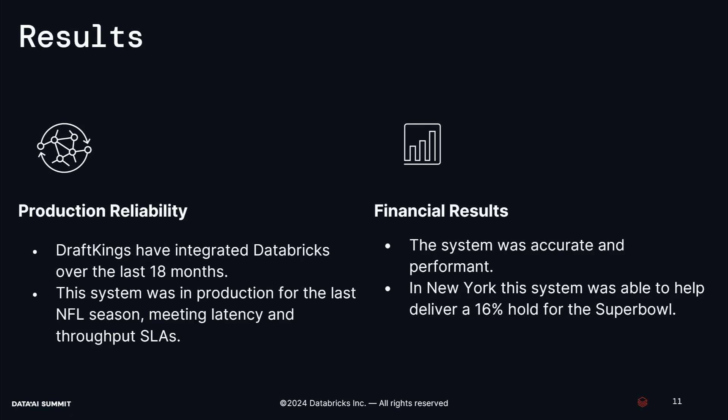In terms of results: DraftKings has had Databricks for the last 18 months and this system has been in production over the last NFL season, meeting the latency and throughput SLAs mentioned earlier. In terms of financial performance — I probably wouldn't be here if it was terrible — the system was accurate and performant. In New York, where some financial metrics are public, this system was able to help deliver a 16% hold for the Super Bowl specifically.